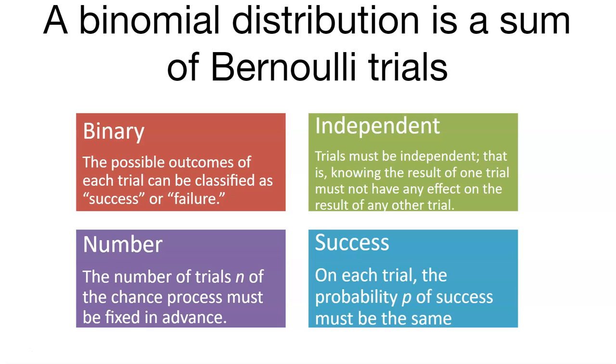The number is the number of trials N that some chance process must be fixed in advance. Say we're going to flip a coin 10 times—N will be 10 in that case. And then we might know the success: on each trial, the probability p of success must be the same.